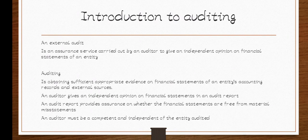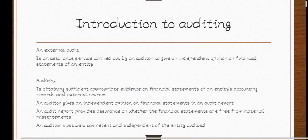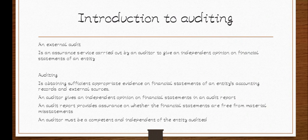An audit report provides assurance — it is where the auditor writes their opinion on whether the financial statements are free from material misstatements, free from error and fraud. The auditor will write a report to assure the owners of the company. Finally, an auditor must be competent and independent of the entity being audited. The auditor must not be related to the organization or anyone in it — they must be independent. In the next video we shall look at the difference between auditing and accounting. Thanks for watching.